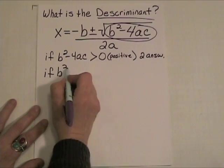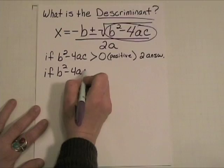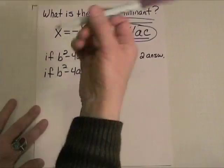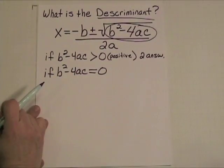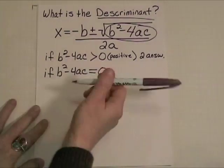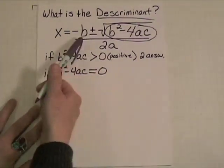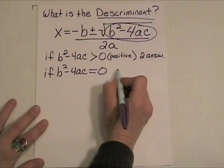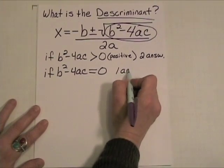If the b squared minus 4ac is exactly equal to zero, then the whole radical will poof away to nothing. The square root of zero is zero. And the problem will then, the answer will then just be the opposite of b, divided by 2a. So, in that case, there will only be one answer.